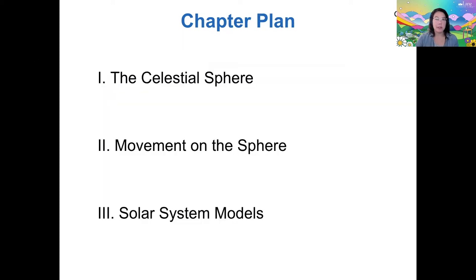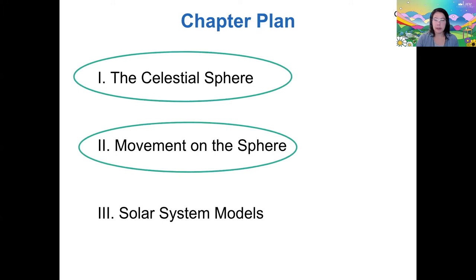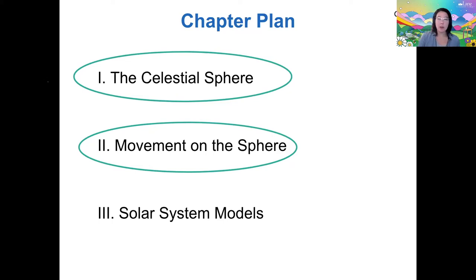Our plan for this chapter is: today we're going to talk about the celestial sphere and the movement of objects in the sky on the celestial sphere. And then next time we'll talk about different models of the solar system from the history of astronomy and what we know now about how the solar system is laid out — but we'll talk about how we got there to that understanding.